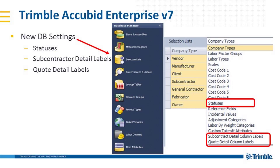Let's take a quick look at the new database settings. You go to the selection list and pull down to see the options where you'll see statuses, subcontract and quote labels, which will allow you to set company-wide standards to make it easier to start a new project and promote consistency amongst your project managers.